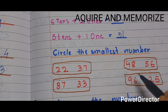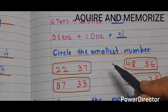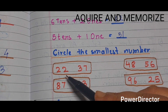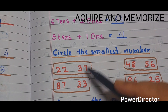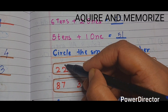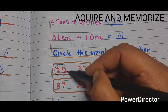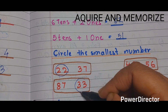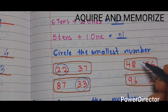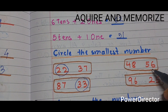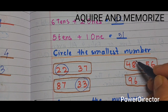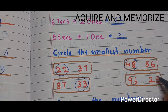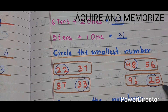Next section is 'circle the smallest number'. Two numbers are given in each section and we circle the smallest one. 22 and 37 — circle 22. 87 and 33 — circle 33. 48 and 56 — circle 48. 96 and 25 — circle 25.